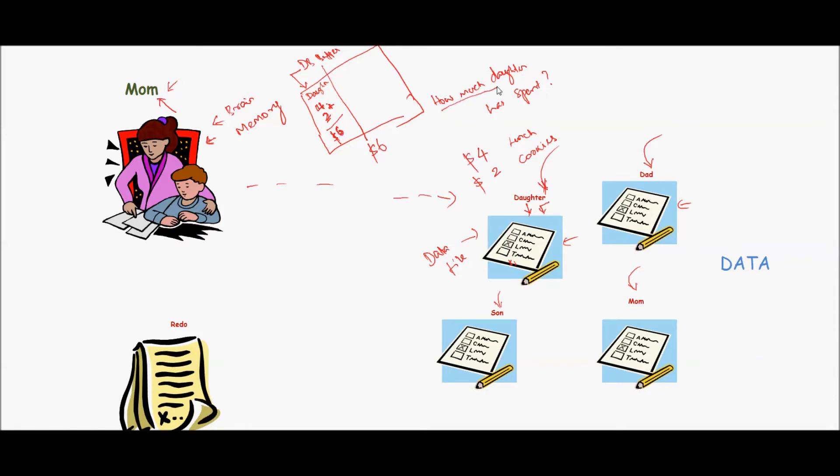This is data file, and the data got transferred to her memory and got stored in an area which we can call database buffer. The operation happened there. And this question, how much daughter has spent, that question gets stored in another part of memory which Oracle calls shared library. The question is registered there. The answer is registered there. The data was read into her memory and it's still there fresh.